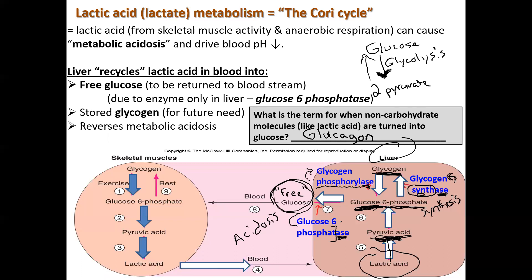On a future exam, when I ask what enzyme only the liver has that allows free glucose into the bloodstream: glycogen synthase synthesizes glycogen, so that's not it. It becomes either glycogen phosphorylase or glucose-6-phosphatase. Here's a memory trick: phosphorylase has an 'L' in front of the 'ase,' whereas glucose-6-phosphatase has a 'T.' L comes before T in the alphabet, so glycogen phosphorylase comes earlier in the process of breaking down glycogen, and phosphatase comes later — the last enzyme that produces free glucose.